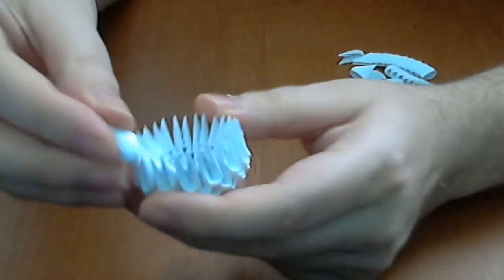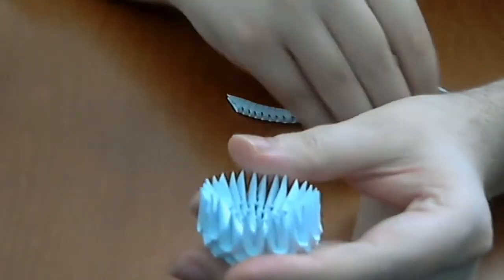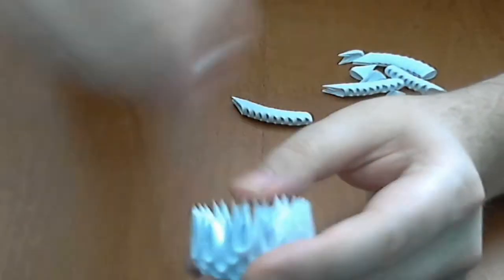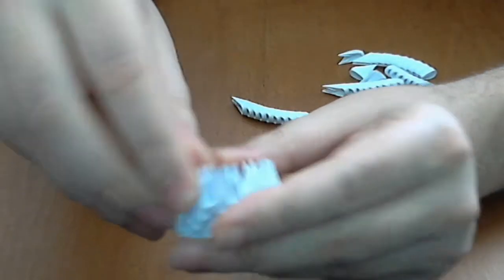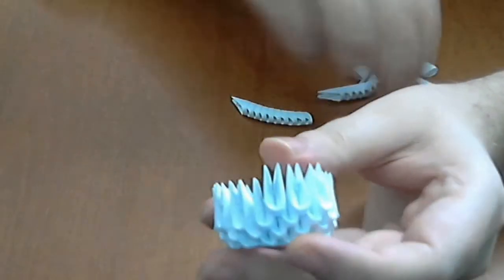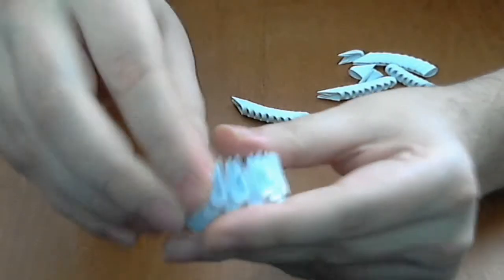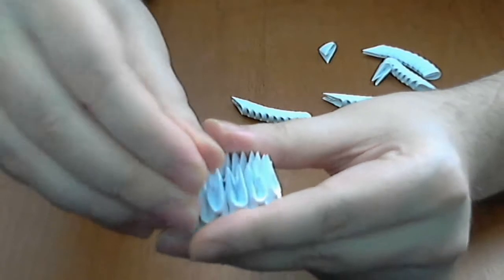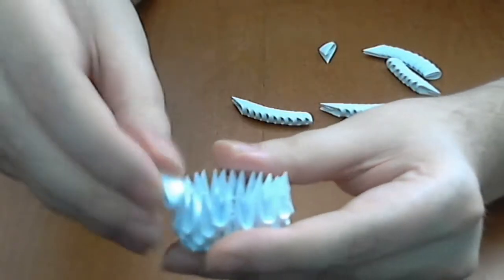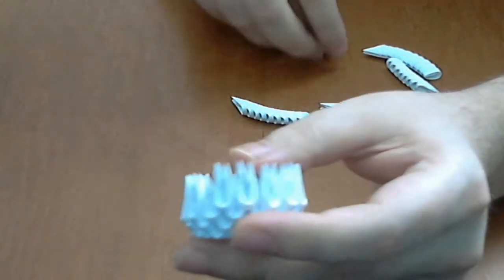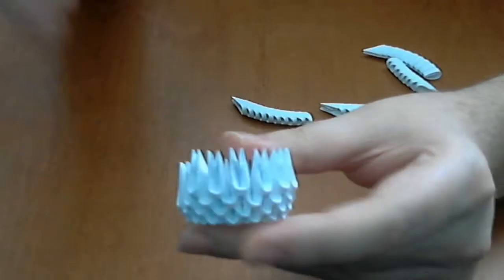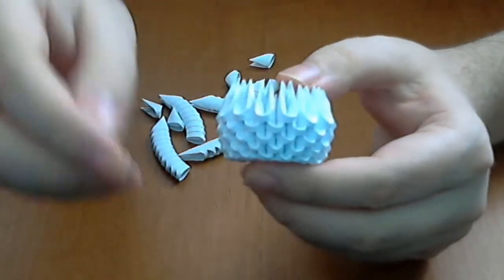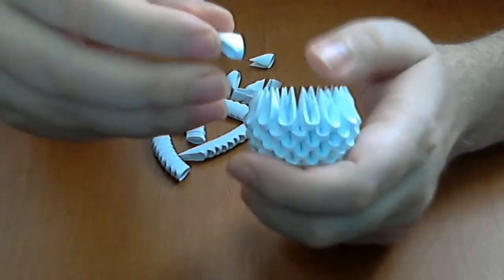And now we will put another 2 normal white rows. Very simple, like this. Complete this row and then put another row.